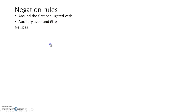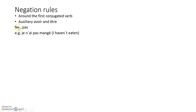Let's start with ne...pas. We've got je n'ai pas mangé — so we've got the ne and the pas around the avoir, the auxiliary verb, to say 'I haven't eaten.' Note here we've got an apostrophe because of the two vowels. Just so you've got an example with être: je ne suis pas allé — the ne and pas go around the auxiliary être, with the past participle taking an extra e if the speaker is female. Note here we don't have that apostrophe, because there aren't two vowels.